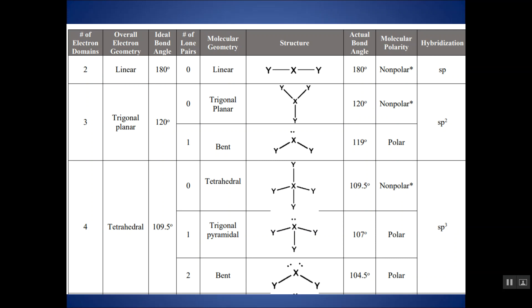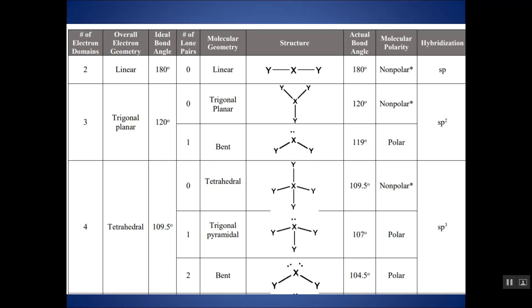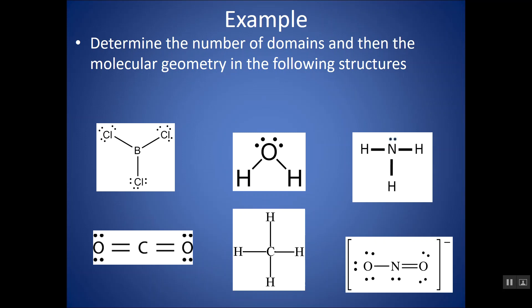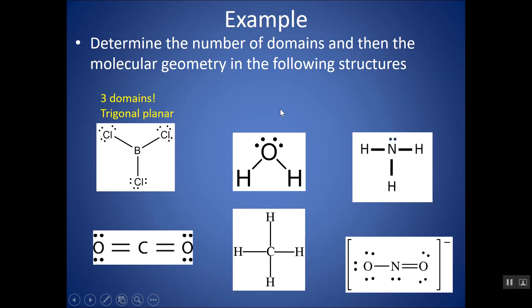Let's look at some examples. Also, if there are only two atoms present, you just assume it's linear, because the only way to connect two things is with a line. Pause the video and try these examples — tell me how many domains are around that central atom, then use your chart to figure out the molecular geometry. For this first example, the central atom has one, two, three domains around it. All of them are bonds with no lone pairs, so three domains, no lone pairs — this is called trigonal planar, with 120 degree bond angles.